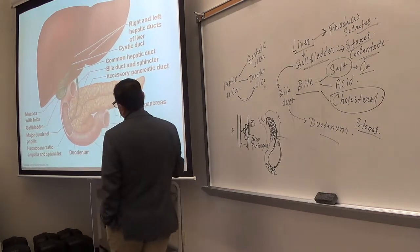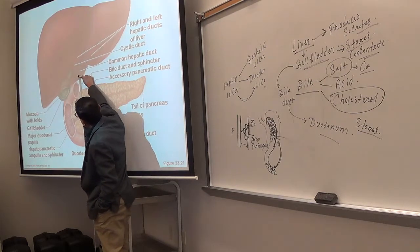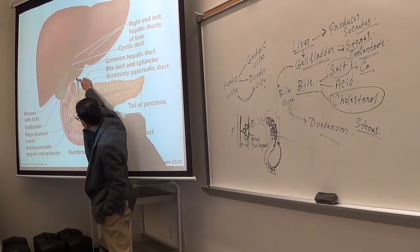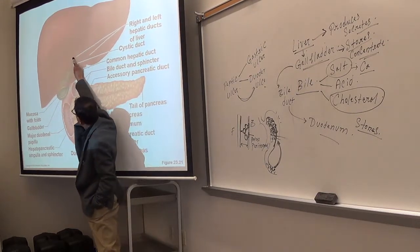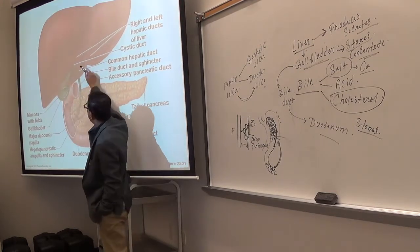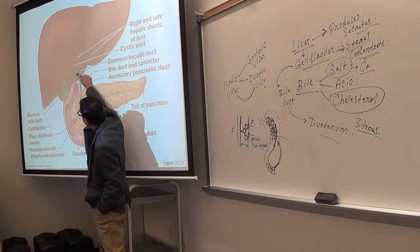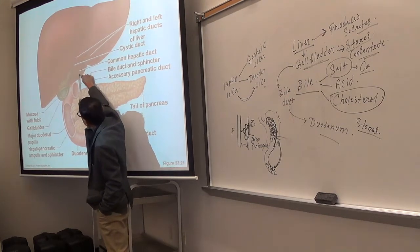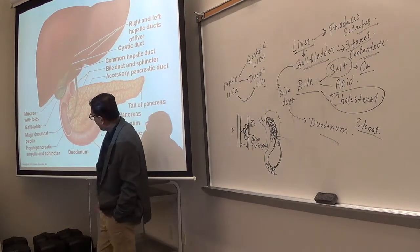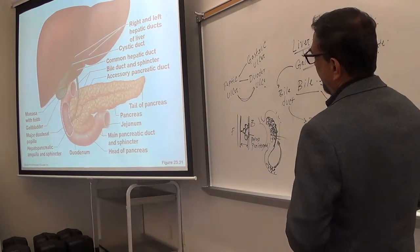The common hepatic duct and cystic duct join together to form the common bile duct, also called the bile duct. From the right lobe comes the right hepatic duct; from the left lobe comes the left hepatic duct. They join to form the common hepatic duct. Then the cystic duct from the gallbladder joins the common hepatic duct to form the common bile duct, which goes all the way to the duodenum and joins the main pancreatic duct. That is the pathway of bile.